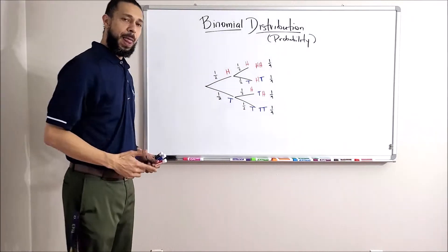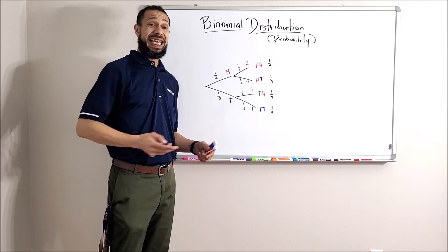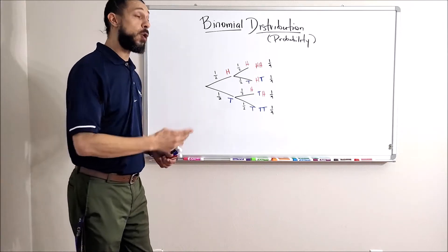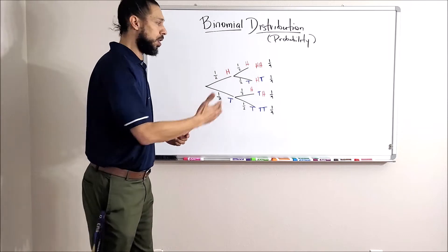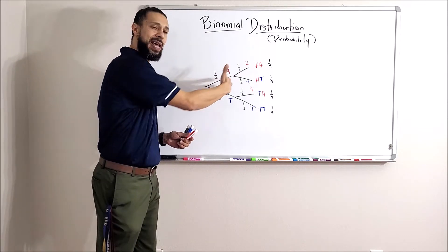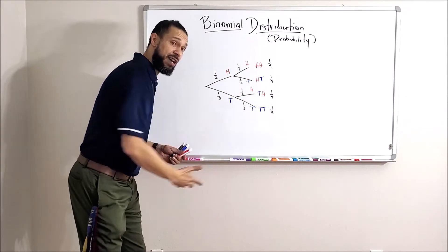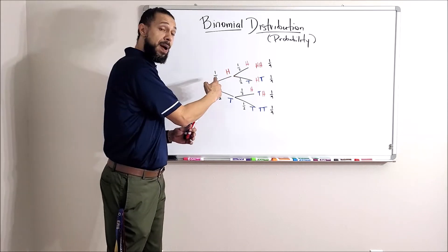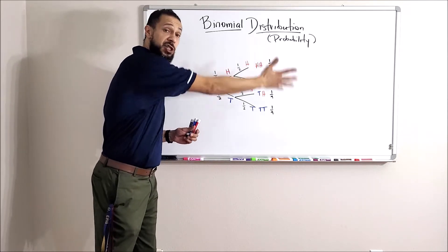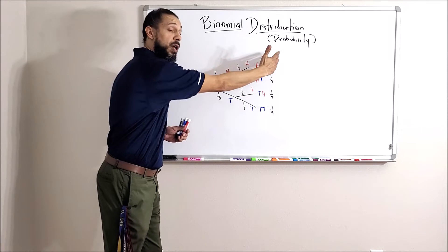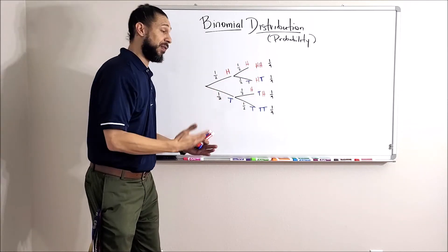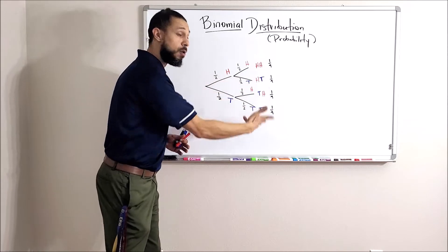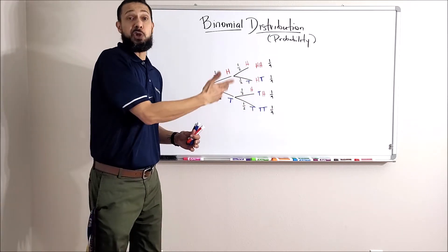In two coin tosses, there are four different outcomes if we're keeping track of heads and tails: two heads, heads tails, tails heads, tails tails. We multiply these probabilities along the way to get our final probability of that outcome.